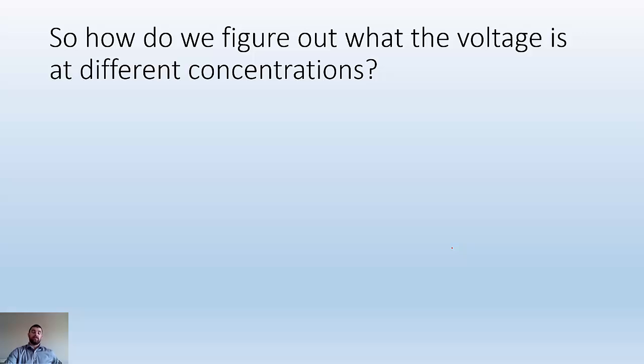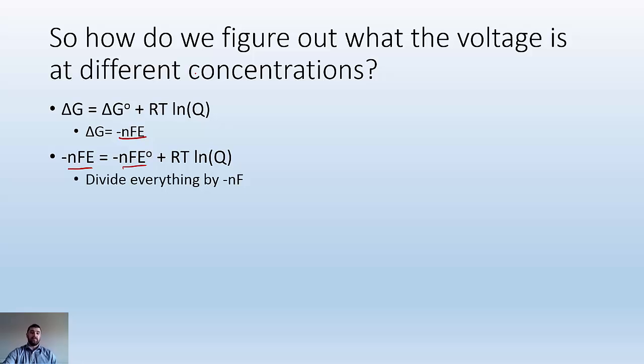How do we figure out what the voltage is at different concentrations? We have delta G equals delta G naught plus RT ln Q. We also know that delta G equals negative NFE from previous equations. So we plug in negative NFE for delta G and negative NFE naught for delta G naught. Divide everything by negative NF to get E by itself. We get E equals E naught minus RT over NF times ln Q. This is the Nernst equation, our go-to equation for figuring out voltage at different concentrations.